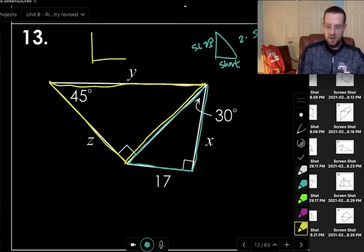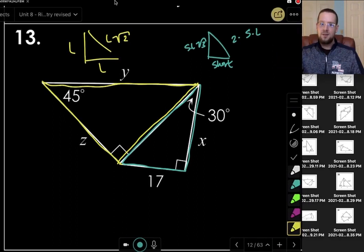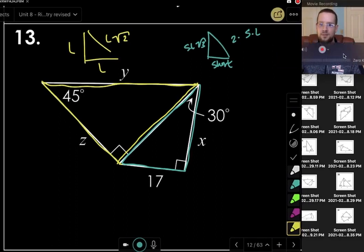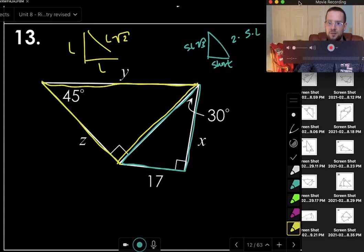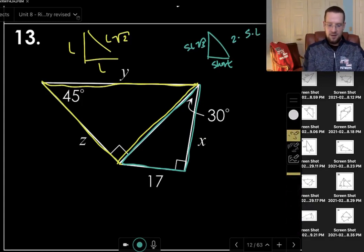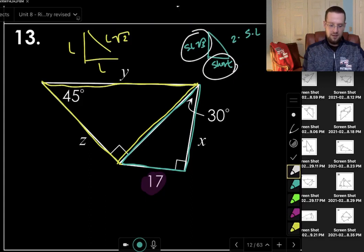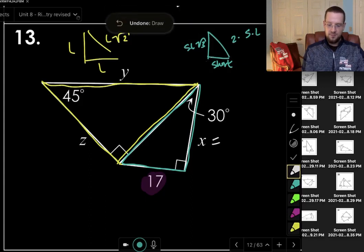And then over here we have our leg, our leg, and then our leg times the square root of two. So we're going to use these structures to get to these solutions. Let's look. Here we're given 17. We're given 17 down here. And we want to think, what is the measure of X? Well, that 17 is the short leg. X is the long leg. So X will be 17 square root three.